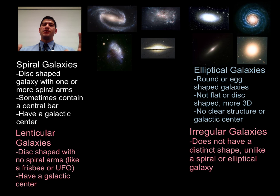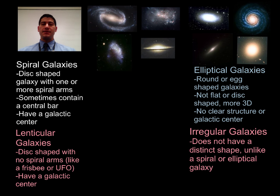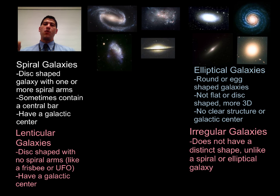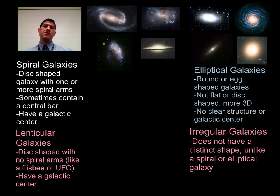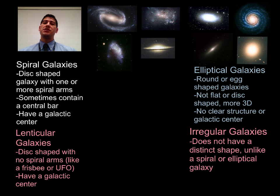Galaxies are the largest components of the universe that we'll look at in this unit. They're usually hundreds of thousands of light years across. It takes light about 200,000 years to travel from one end of our Milky Way galaxy to the other end, traveling at 300 million meters per second. Think about how big these objects are. Each galaxy is made up of billions and billions of stars, and they're classified according to their shape.